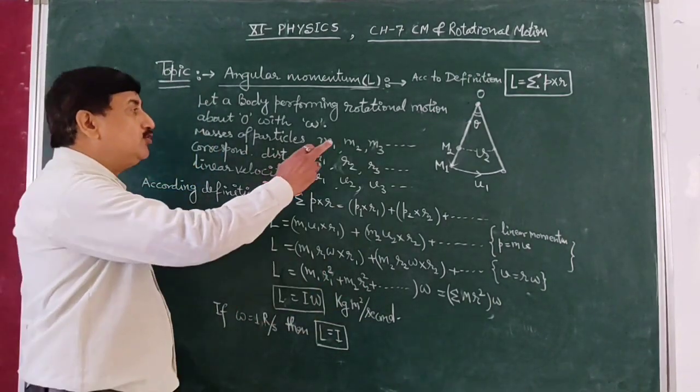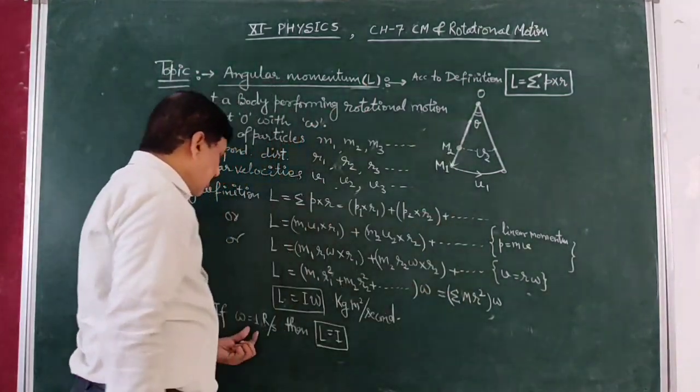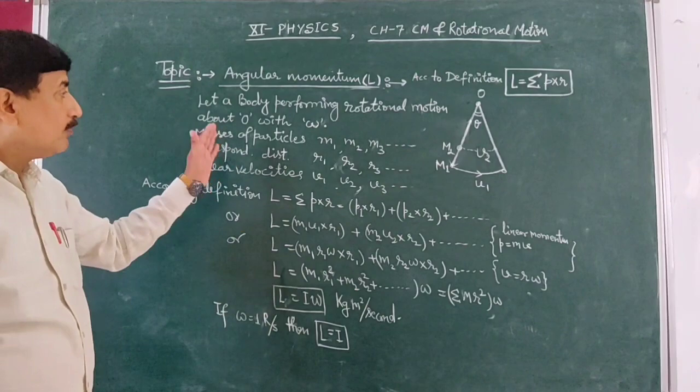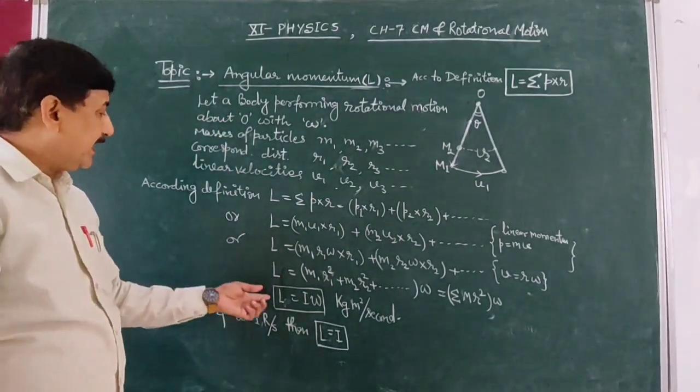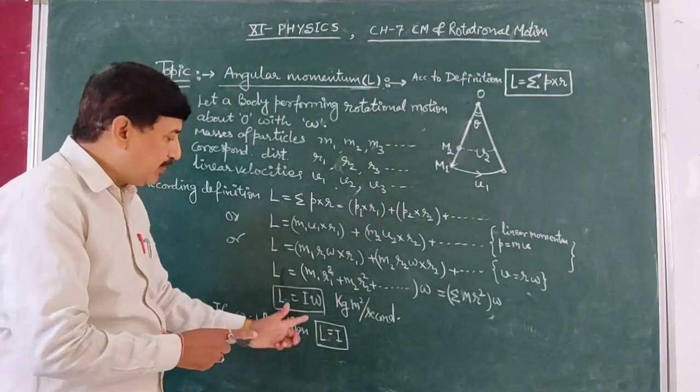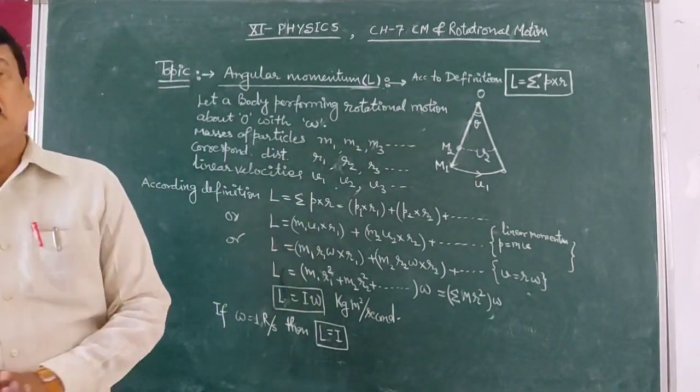If the body has unit moment of inertia and omega is one, then its angular momentum numerically equals the moment of inertia. Thank you.